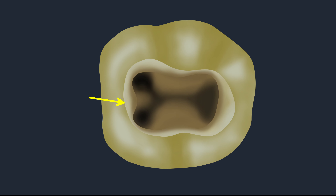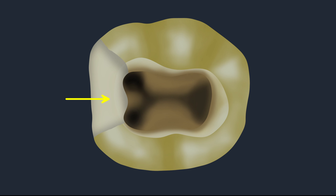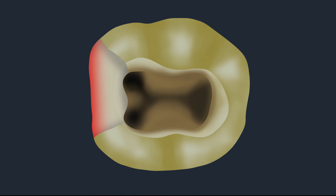We all know that while doing root canal treatment, the access cavity should have four walls. But in many situations, because of a previous restorative procedure or because of the extent of the decay, one or more walls might be lost. If we do root canal treatment without rebuilding that lost wall, placement of a temporary coronal seal between appointments will be leaky and may lead to failure of the endodontic treatment. Also, blood and gingival fluids can seep into the access cavity, contaminating the sterile field created by cleaning and shaping.